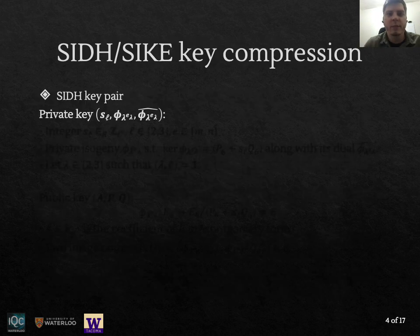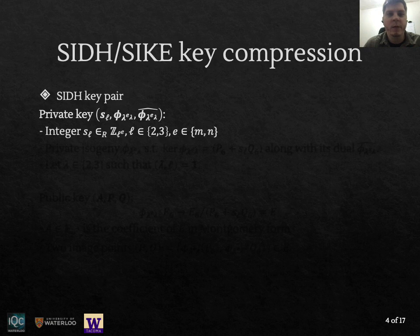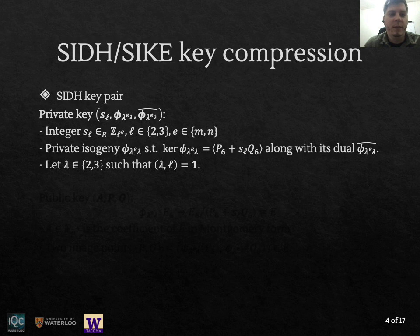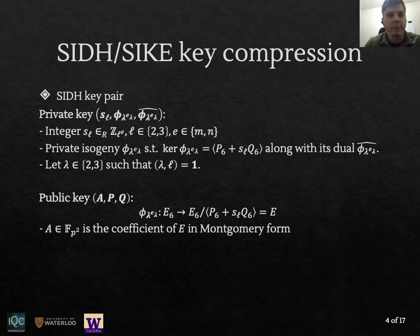For the purposes of this work, we are going to consider SIDH private keys as triples, where s_ℓ is going to be an integer mod ℓ^e. We have also an isogeny φ of degree λ^e, whose kernel is generated by the point P6 + s_ℓ Q6. And we also have access to its dual φ̂. And here λ is going to be coprime to ℓ.